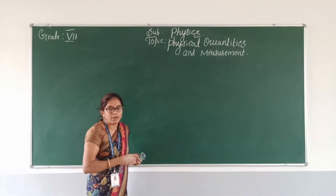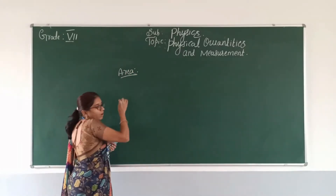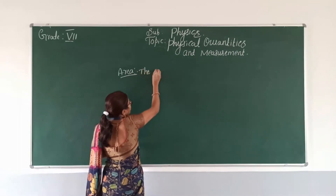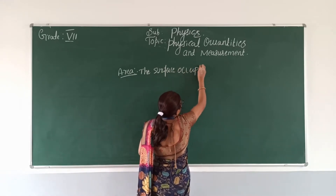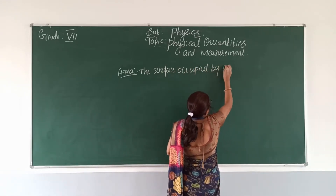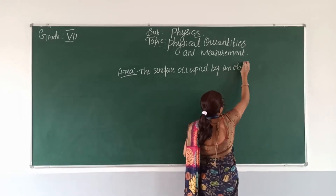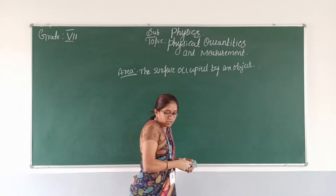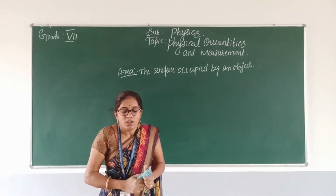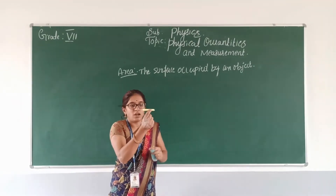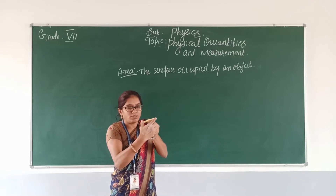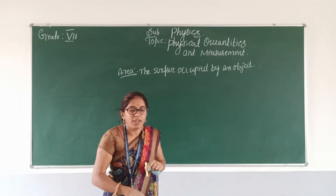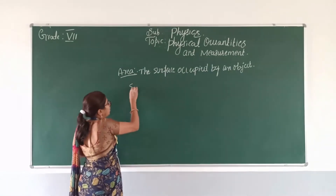First we are going to learn the definition of area. The area of an object is the surface occupied by that object. So if you consider the area of a chart, what is its area means — what is its surface, how much surface does it occupy — that we call the area. So the next one is what is its unit.